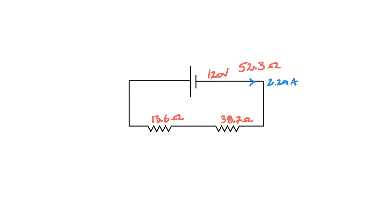We can use that current now to figure out what the volt drop is across each resistor. So we're going to get the volt drop across this resistor and the volt drop across this resistor.